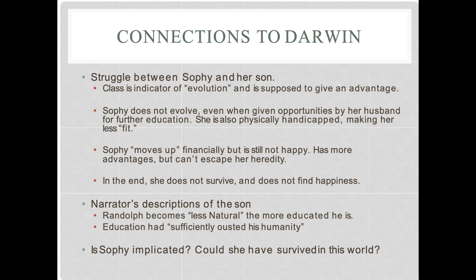First, think about social class. Sophie herself is lower class — a parlor maid in a parson's home doing labor. When she marries him, she is elevated from the lower class to the middle class, really almost upper class. It would be a significant evolution for Sophie to leave her lower working class background and become part of the gentleman's class. But what you see is that Sophie herself does not evolve. Even when given opportunities by her husband for further education, we're told she still mixes up her verbs and doesn't pronounce them with the social class grammar expected at that time.